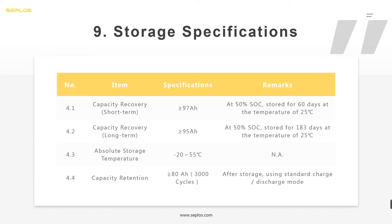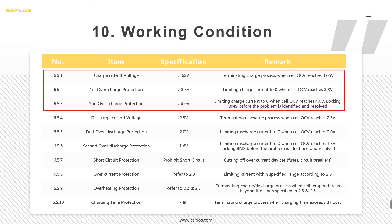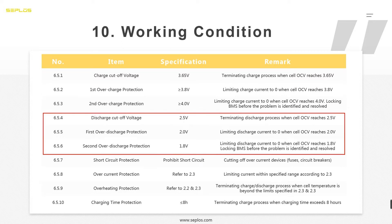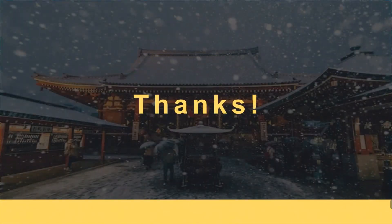For storage specification, the data sheet states that for long-term storage the capacity will decrease permanently, so do not stock your batteries for a long time. For working conditions, I think two things are most important: the charging cut-off voltage and the discharging cut-off voltage. We need to set three-level cut-off voltages to implement triple protection.